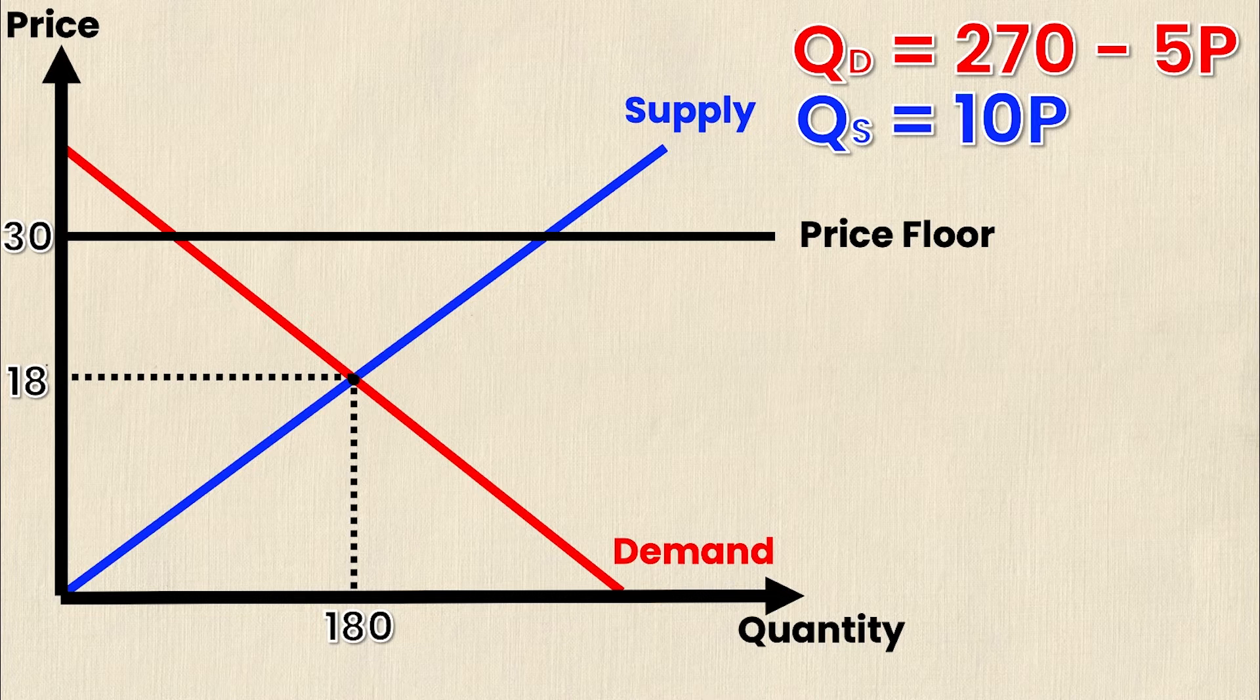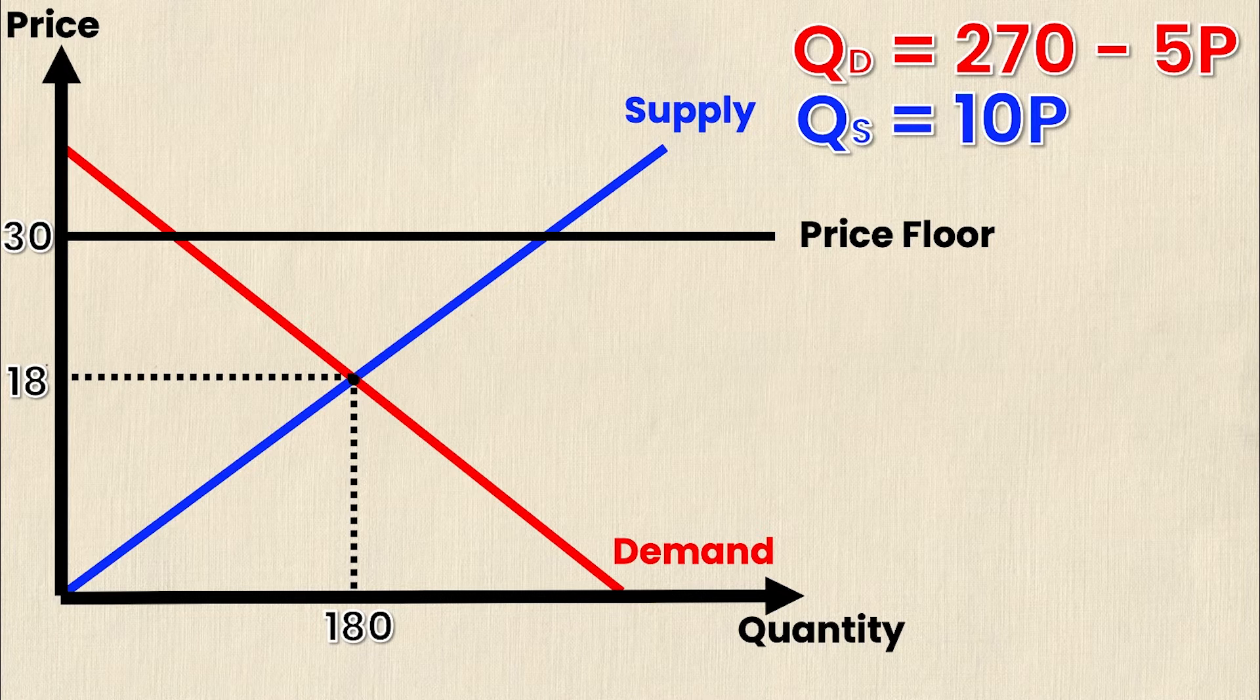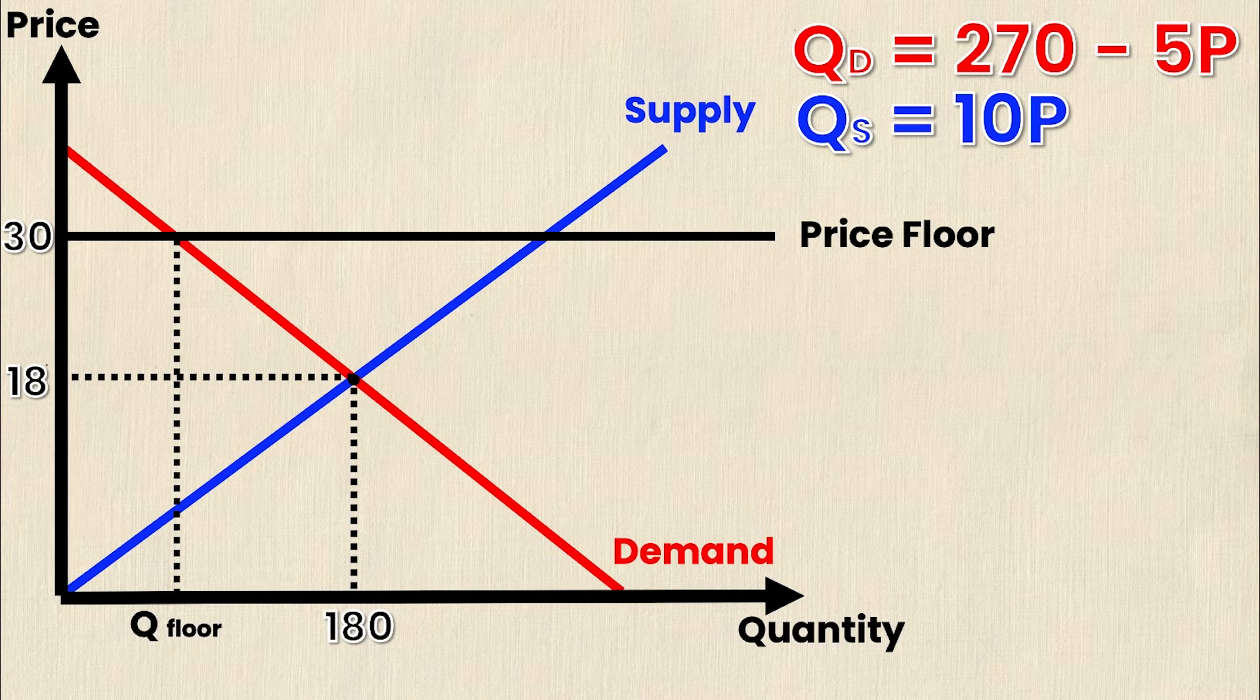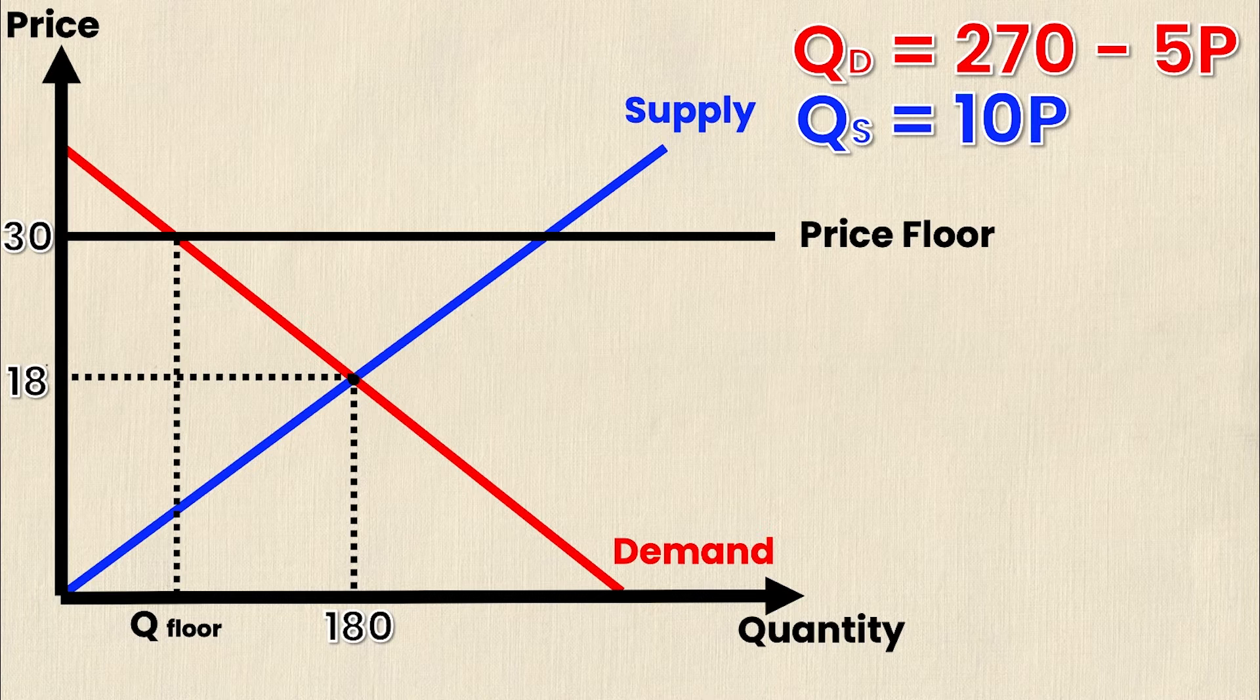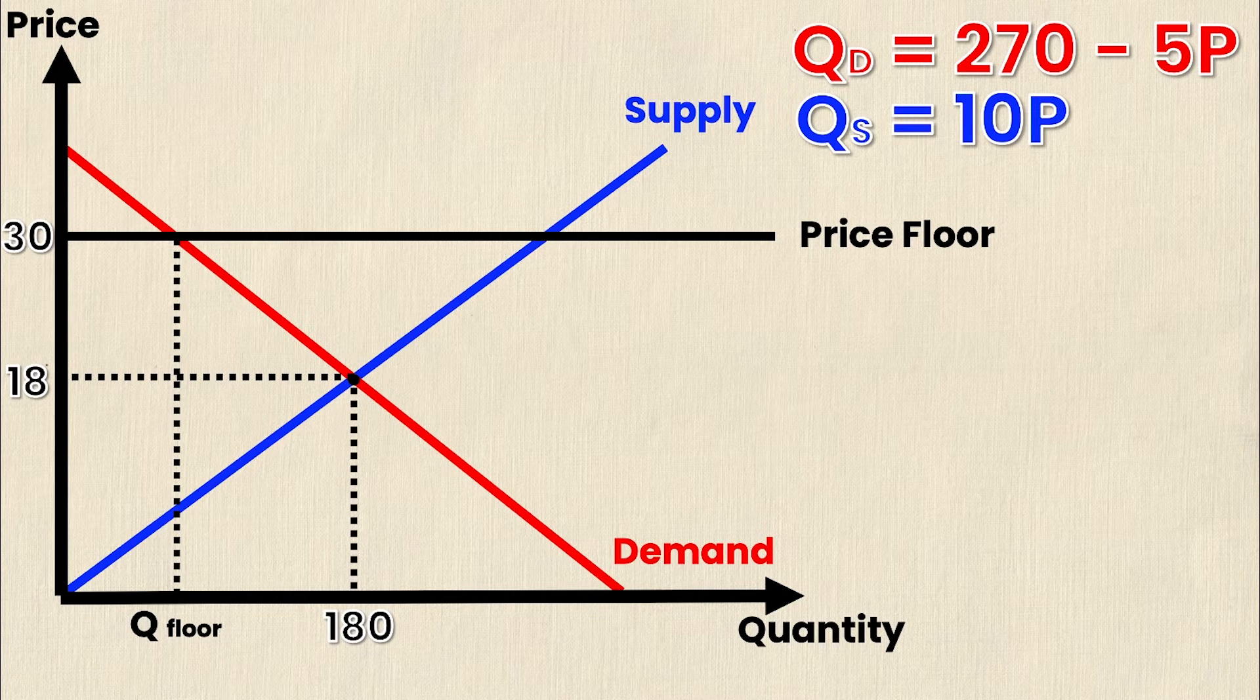Now we have a new quantity being traded at, and this is the intersection of the demand curve and the new price line, and this can be denoted as Q floor or the quantity traded at this price floor. As you can see, Q floor is strictly less than 180 and therefore we know there's going to be some deadweight loss. But let's calculate exactly how much deadweight loss occurs in a real number.